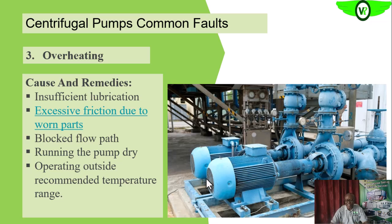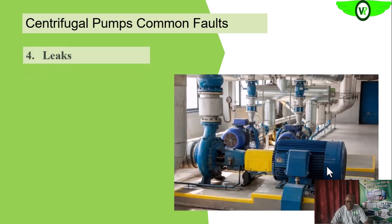If you operate the pump outside the recommended temperature range — for example, if the ambient temperature is 60°C when the equipment is designed for 40°C — the electric motor will first assume the ambient temperature, then heat from the windings during normal operation is added on top of that. This can take the motor temperature to a very high level, potentially burning out the windings. The pump components are also designed to operate within certain temperature ranges due to expansion and contraction considerations.